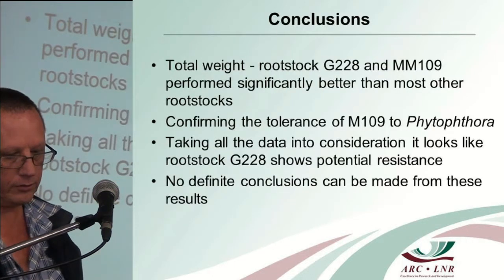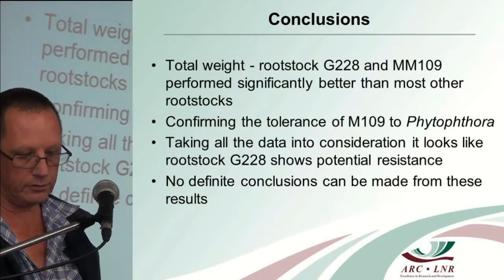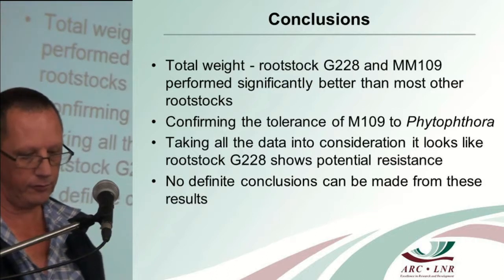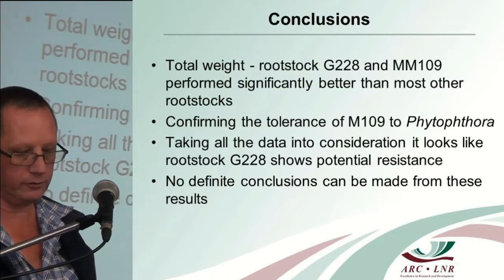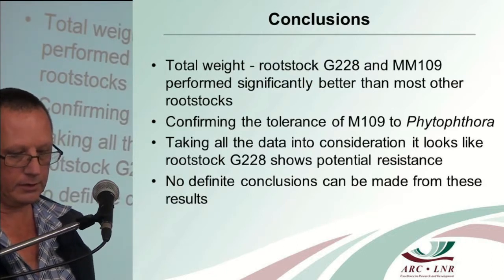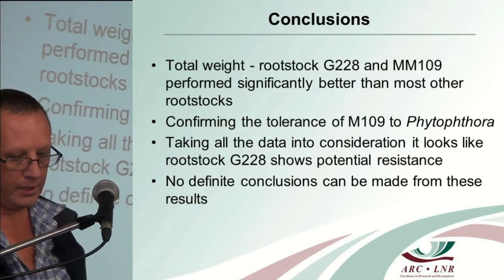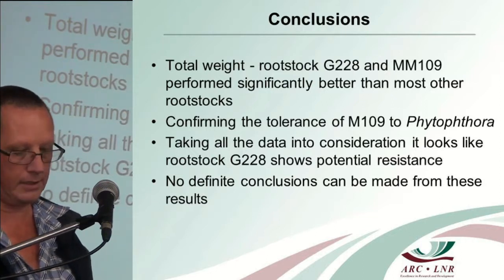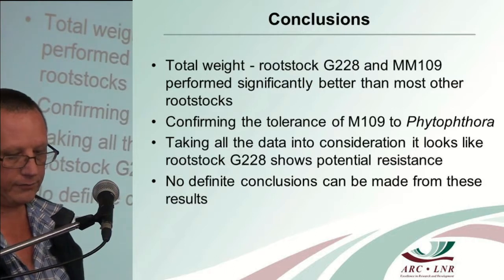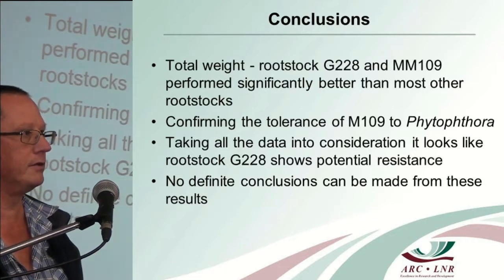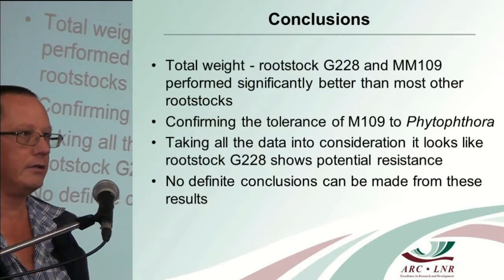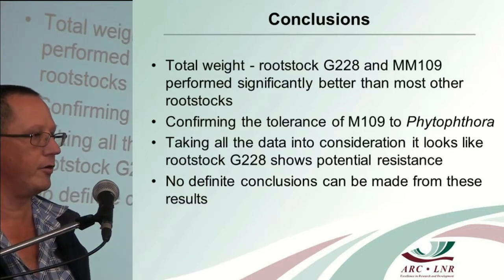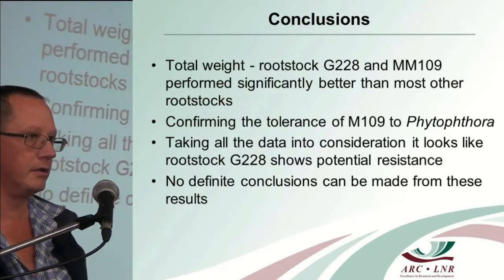In conclusion, looking at the total weight of the plants, rootstocks G228 and MM109 performed significantly better than most other rootstocks, confirming the tolerance of MM109 to Phytophthora. Taking all the data into consideration, rootstock G228 shows potential resistance to Phytophthora. Unfortunately, no definite conclusions could be made because of the different rootstocks and the huge variation in the data obtained from the different seasons.